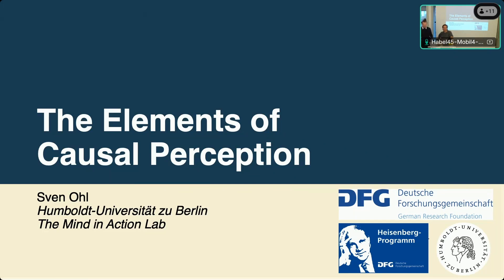As an introduction, Sven was originally studying psychology in Potsdam, did his diploma in Potsdam, and then his PhD also in Potsdam with Professor Reinhold Kliegl and Stefan Brandt. He then joined Martin Rolf's group for quite some time, always with his own projects where he was PI. Now, since this year, he has a junior research group in the Heisenberg program, called the Mind in Action Lab.